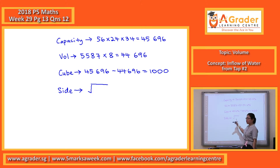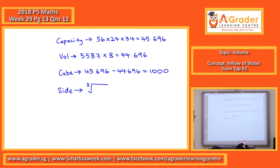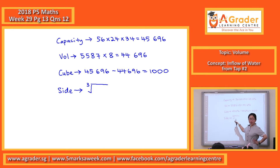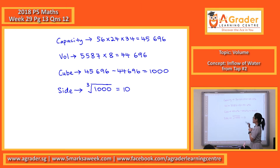When you press Shift and the square root button, you get the cube root symbol with a box. You put in 1,000. After you press the cube root, key in 1,000, then press the equals button. What do you see? 10. So the answer is 10.